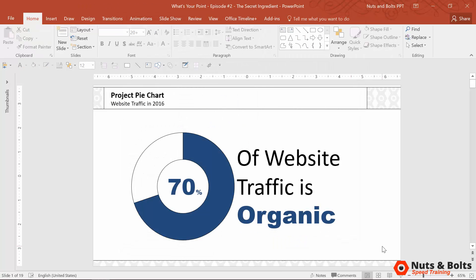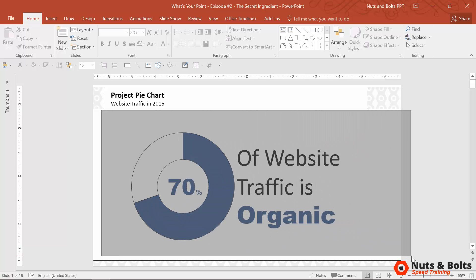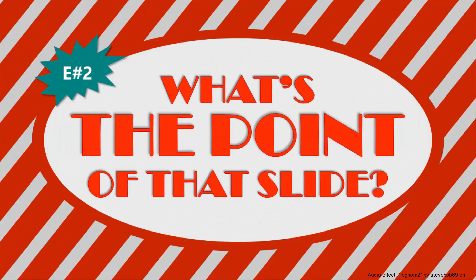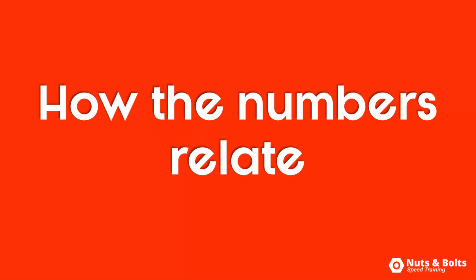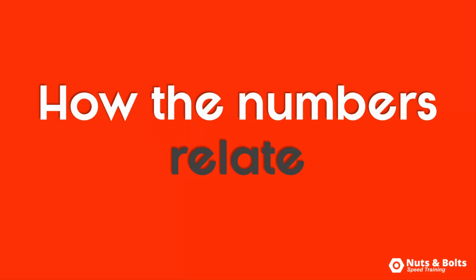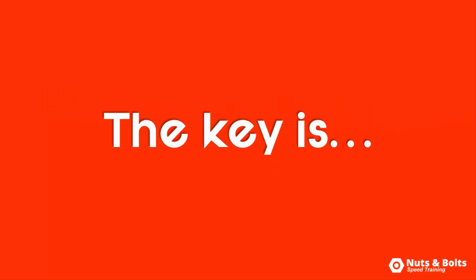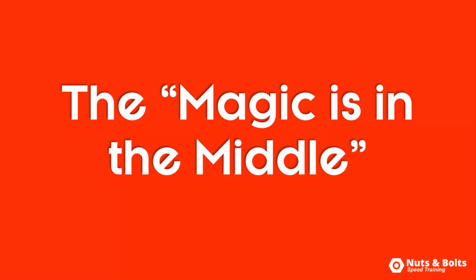Although the slide looks better aesthetically, kind of like an infographic, we're still missing what I believe the secret ingredient is. Even after we've done some work like this, we still have to ask ourselves: what's the point of that slide? Why did we pull this information together in the first place? Because the last thing you want to hear from your audience when you present is a "so what?" And the secret ingredient that basically forces you to get to a point is context — how your number, statistic, ratio, or whatever it is you're working with relates to something else. The most important thing to remember about context from a presenting perspective is that the magic is in the middle.